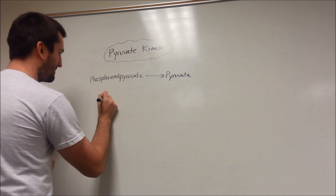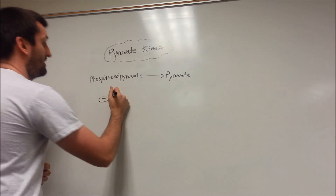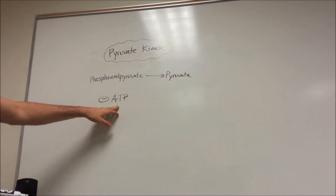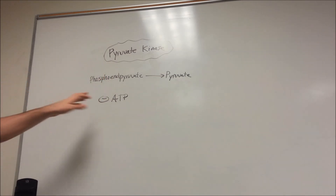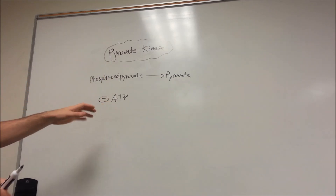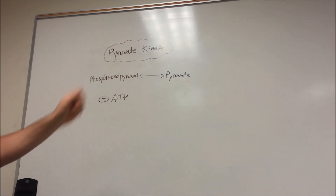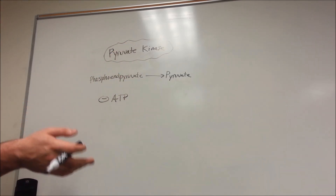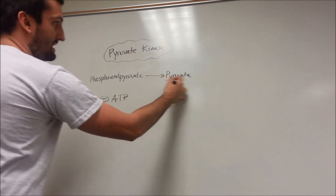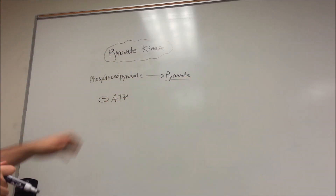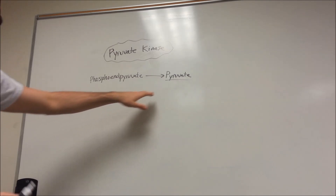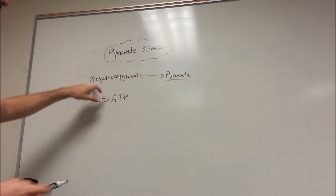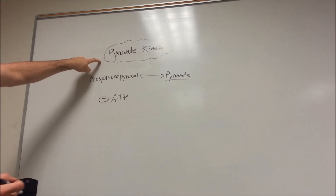What inhibits pyruvate kinase? High levels of ATP. When you have high ATP, you don't need to keep going through glycolysis, because the point of glycolysis is ultimately to create ATP. Pyruvate can create a lot of ATP, but if you already have high ATP, you don't need more pyruvate. So ATP is going to negatively inhibit this enzyme.